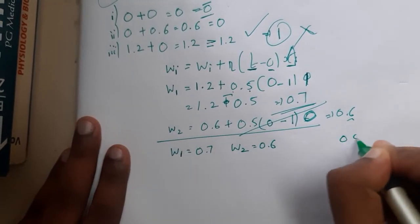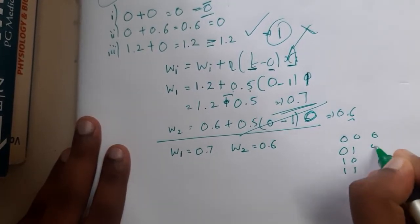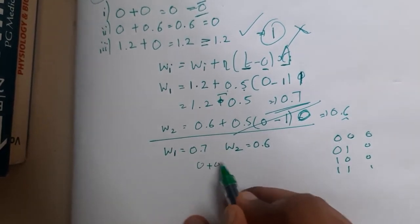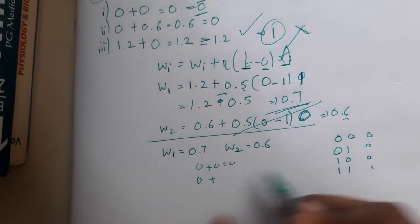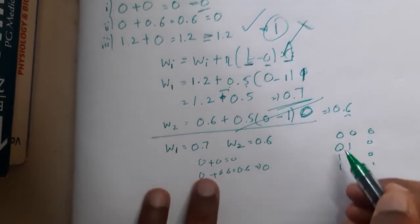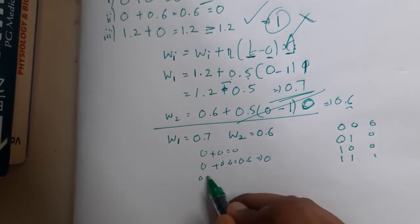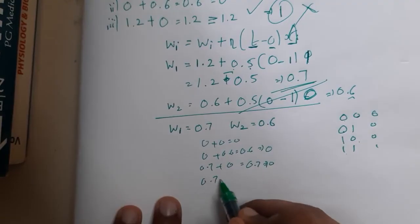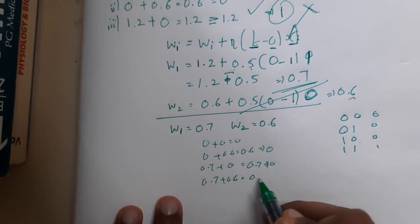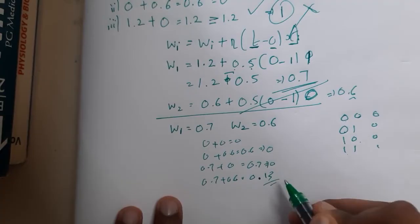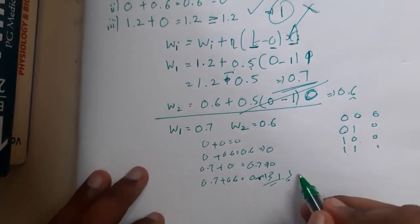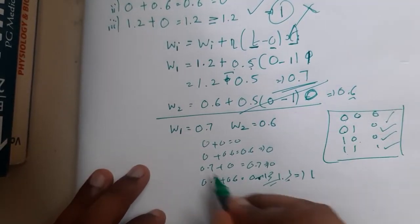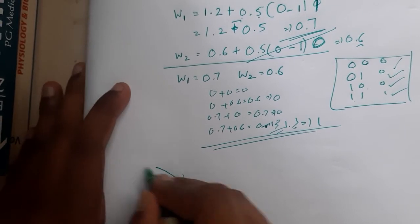Now restart with the updated weights w1=0.7 and w2=0.6. Case (0,0): 0+0=0 → output 0. Case (0,1): 0+0.6=0.6 < 1 → output 0. Case (1,0): 0.7+0=0.7 < 1 → output 0. Case (1,1): 0.7+0.6=1.3 ≥ 1 → output 1. We get 0,0,0,1 — exactly the AND gate truth table.